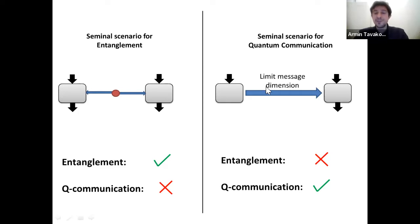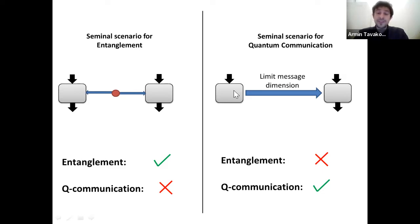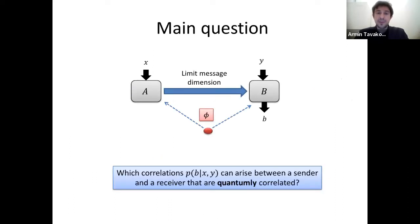In a scenario like this, in order to do any interesting physics, we have to make some assumption on the channel. The most popular and by far most well-researched assumption is to limit the capacity of the channel, specifically to limit the dimension of the quantum message. These scenarios feature quantum communication, but have typically been studied either when the devices are independent or at most classically correlated. What we are interested in here is to merge the two — to have both entanglement and quantum communications.